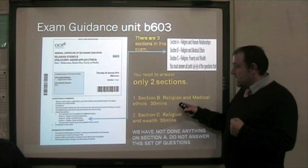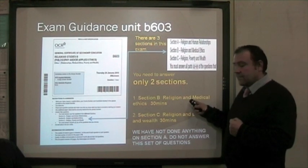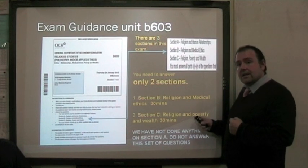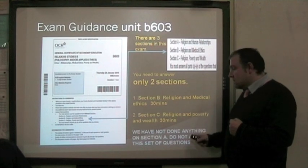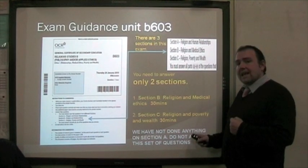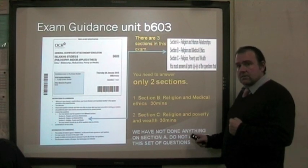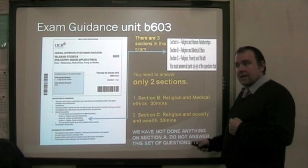Section B, Religion and Medical Ethics, and Section C, Religion, Poverty and Wealth. You do not answer any of Section A as we have done nothing in our classroom lessons on religion and human relationships.